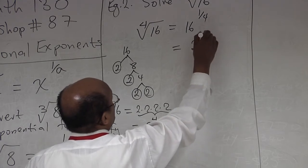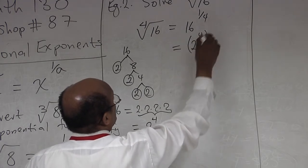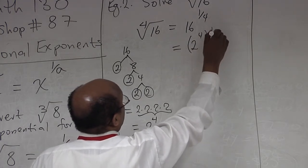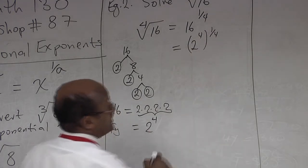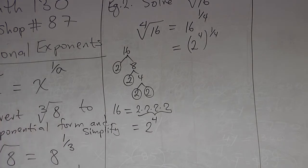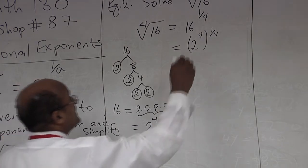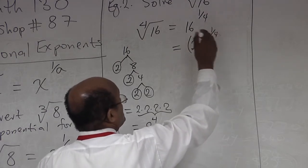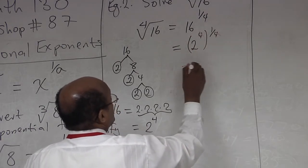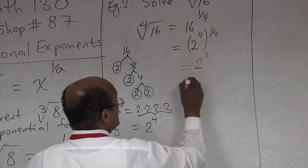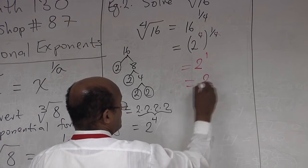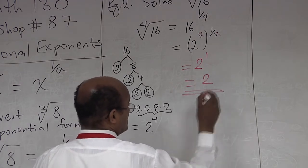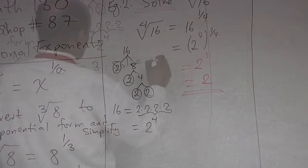So this becomes 2 to the power of 4, and you apply the exponent of 1 over 4. This cancels out: 4 over 4 equals 1, so 2 to the power of 1, which is 2. That's the final answer.